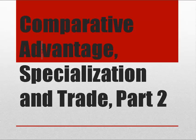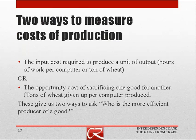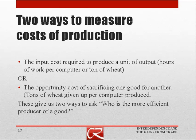In the second segment of this series of video lectures, we're going to jump in and try to understand why having the US specialize in wheat and Japan specialize in computers can increase global production of both goods, even though each country used the same number of labor hours. We're going to see that there are two ways to measure the costs of production. One way is the input cost required to produce a unit of output — the US required 100 hours of work to produce a computer or 10 hours per ton of wheat.